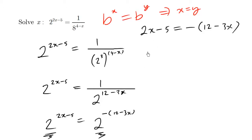So let's finish this off using basic algebra. We have 2x minus 5 equals, I'm just distributing this negative 1, negative 12 plus 3x. We're just going to move this 2x over. We have 3x minus 2x is x equals 7. Negative 5 plus 12 is 7. So the final answer is x equals 7.